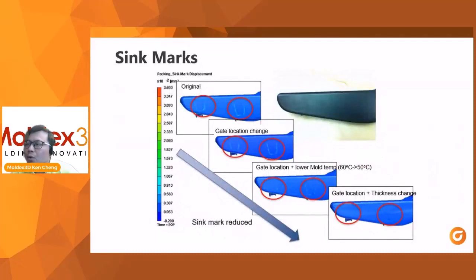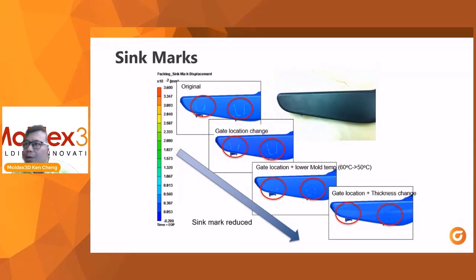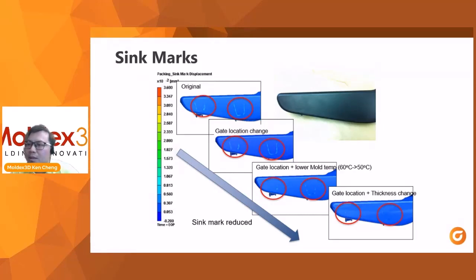This example shows an original gating location that is far away from the sink mark area. Changing the gate location closer to the sink mark area helps you use higher packing pressure to pack that area; however, it does not fully resolve the issue. You can also change the mold temperature to a lower temperature to get frozen layers on the skin, but eventually you still need to go back and change the thickness to solve the sink mark issue.